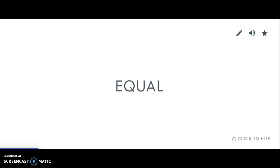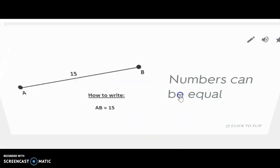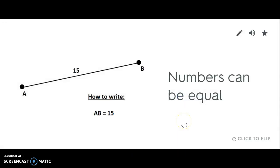The first word we have to have is equal, which sounds basic because you've always dealt with equal things. But in geometry, equal deals with numbers. Numbers can be equal.